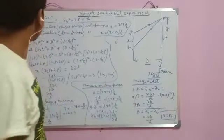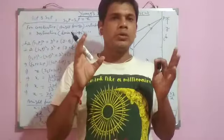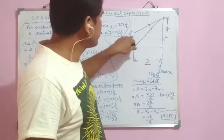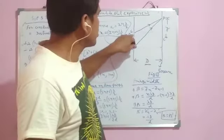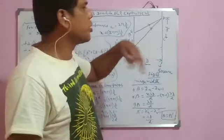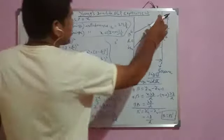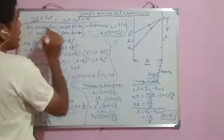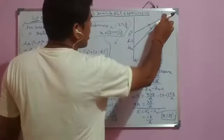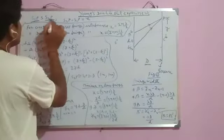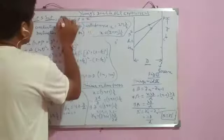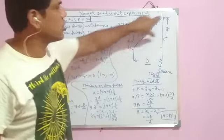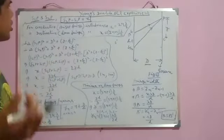First, we have to find the path difference between the two waves — that is, between the wave coming from slit S2 and slit S1 when they reach point P. The path traveled by the wave from S1 to P is S1P, and the path from S2 to P is S2P. We let the path difference between S2P and S1P equal to X, since S2P is greater than S1P.